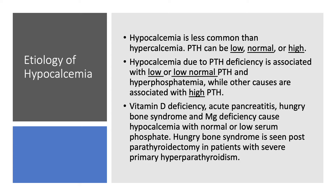Vitamin D deficiency, acute pancreatitis, hungry bone syndrome, and magnesium deficiency cause hypocalcemia with normal or low serum phosphate. With vitamin D deficiency, you are going to have decreased absorption of both calcium and phosphorus in the intestine. With acute pancreatitis and hungry bone syndrome, phosphorus and calcium are going to precipitate — whether in the pancreas or in the bone.